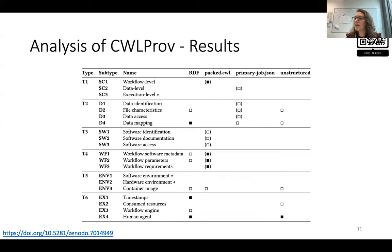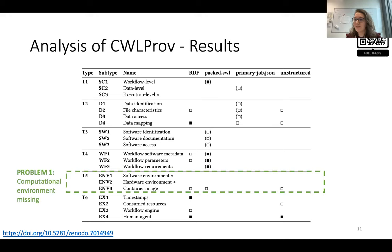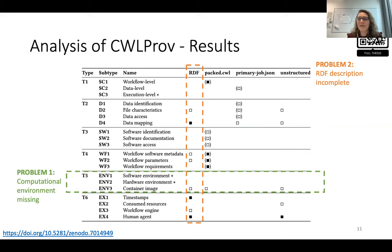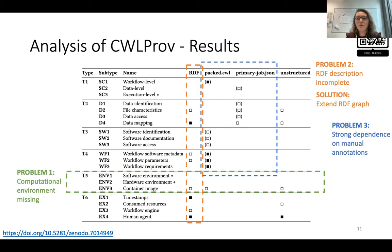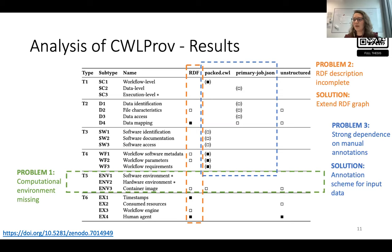From this full analysis, we made three main observations. First, the computational environment is severely underrepresented in the provenance. Second, the RDF description of the execution is incomplete, because many annotations present in the workflow are not propagated to RDF — and as a solution, we propose an extension to the RDF graph. Third, a lot of information is very dependent on manual input by the workflow author, and in the current CWL standards there are no clear guidelines for how to do this. As a solution, we propose an annotation scheme for input data.